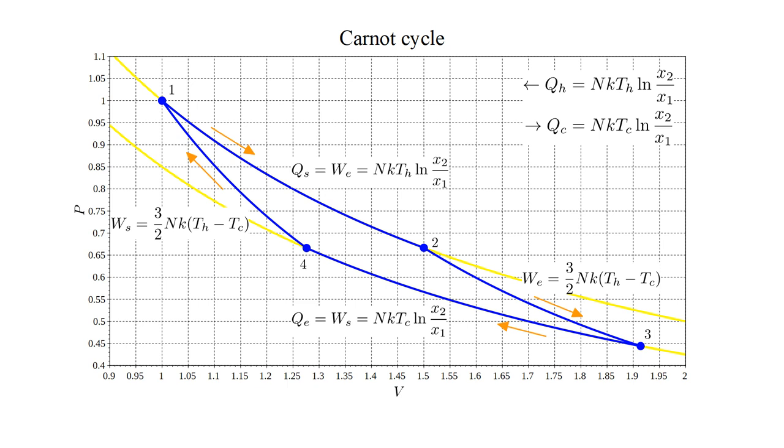Finally, adiabatic compression takes the system from state four to state one. Work WS equal to three halves NKT hot minus T cold is done on the system and converted to internal energy as the gas warms to temperature T hot.